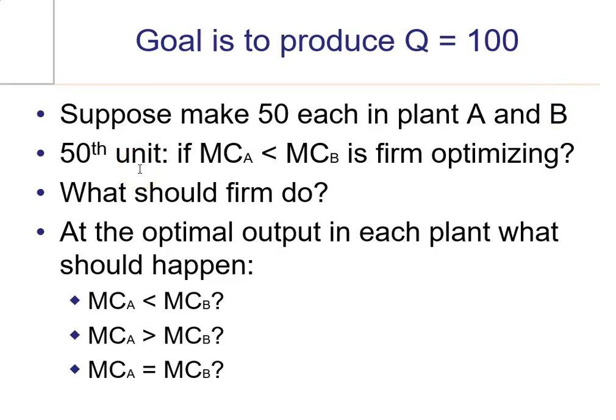And suppose that that 50th unit that was produced in plant A has a lower marginal cost than the 50th unit produced in plant B. Is this firm optimizing if that's the case? If the marginal cost in one plant is lower than the marginal cost in the other plant?